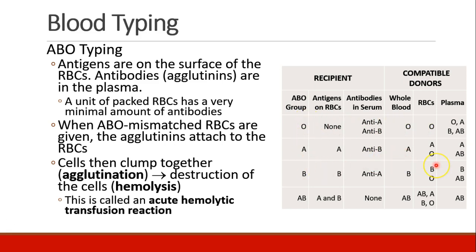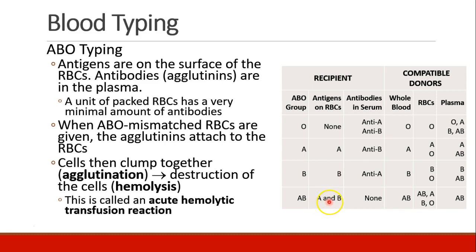Who can donate to different recipients? It depends what you're donating. For a type B recipient, if you're donating red blood cells, you could donate type B blood, because type B blood only has B antigens and will be compatible with the patient's own blood. You could also donate type O blood, because type O doesn't have any antigens and won't be recognized as foreign. But if you're donating plasma, the situation is the opposite. Type B plasma has only anti-A antibodies, so that's fine for this patient. Type AB plasma comes from a patient who has A and B antigens and therefore no antibodies to A or B, so that would also be a good match for someone with type B blood.